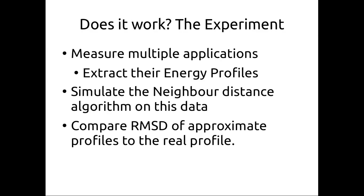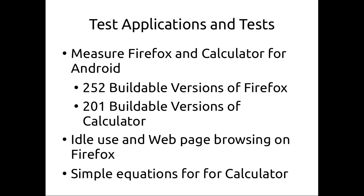We tested against multiple applications to see if this works. We simulate the neighbor distance algorithm on real data and compare RMSD of the approximate profiles to the real profile. We have two test applications, each with more than 200 buildable revisions: Firefox and Calculator. For Firefox, tests are idle use and browsing a web page. For Calculator, tests are simple equations like GST calculations and quadratic computations.